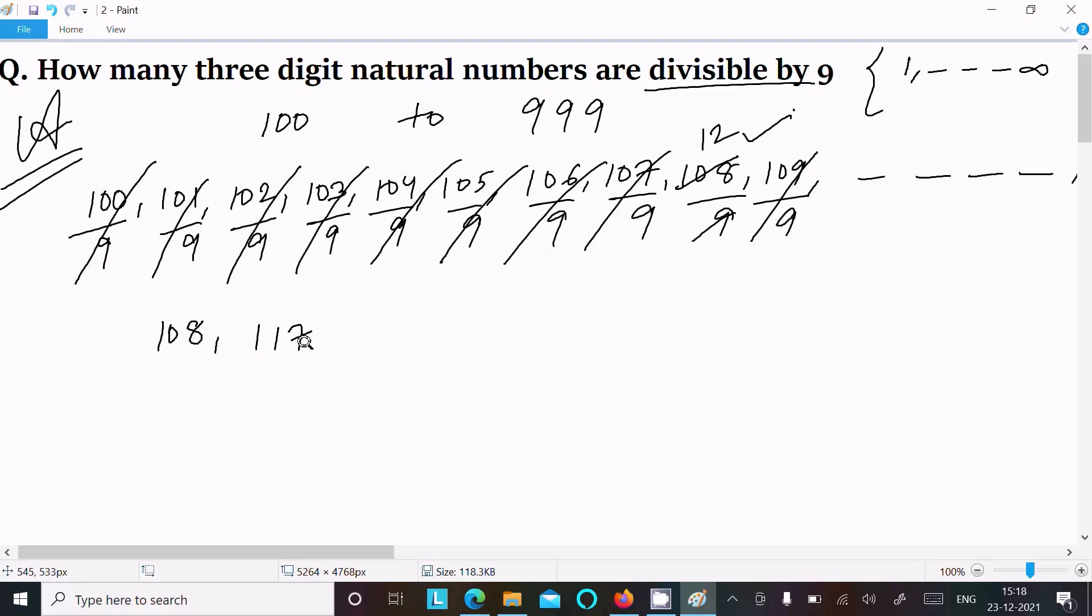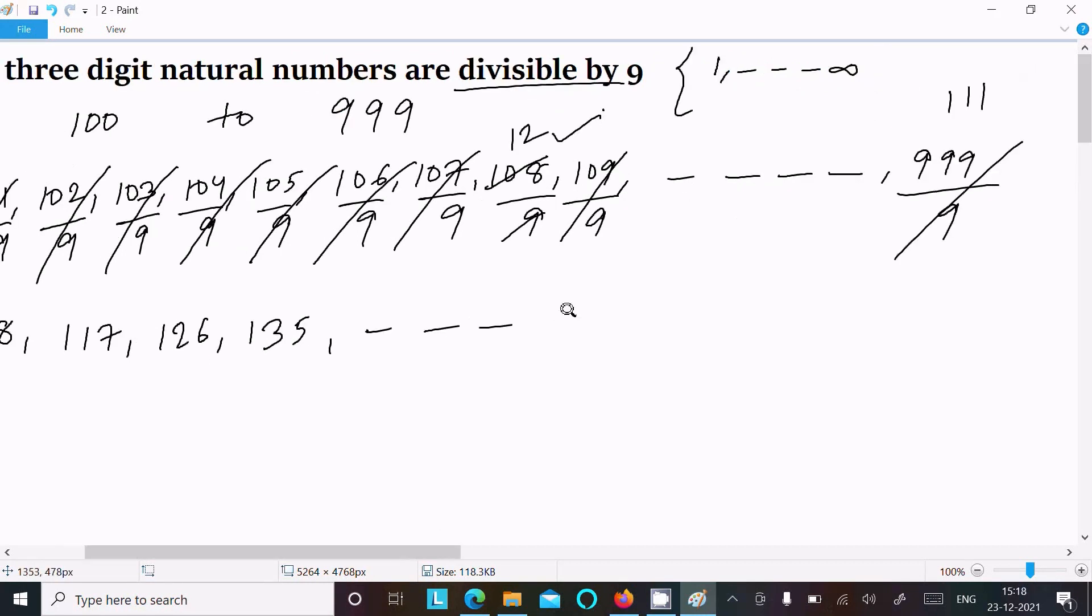The next is 117 plus 9, that is 126. And 126 plus 9 is 135. This continues on, so the last digit is 999.